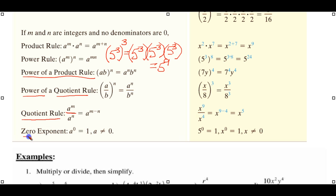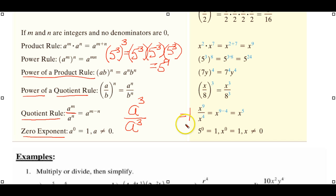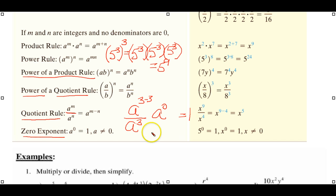Another rule you'll run across is the zero exponent. If I had a to the third divided by a to the third, anything divided by itself is equal to one. Using the quotient rule, we bring up the three, and as it gets there it becomes negative three — this then becomes a to the zero power. And a to the zero power is defined as one, as long as a is not zero.